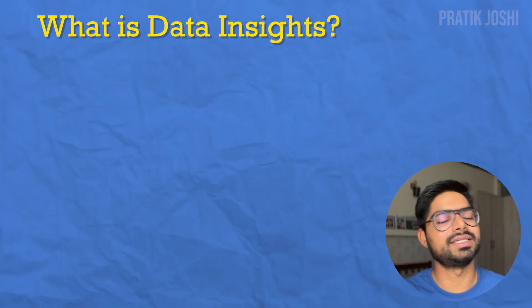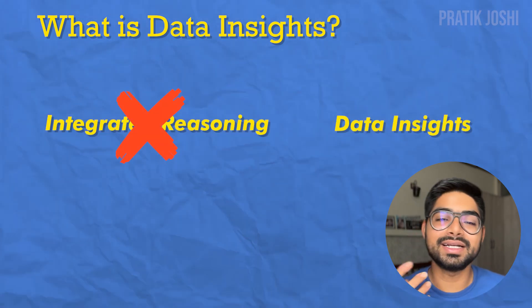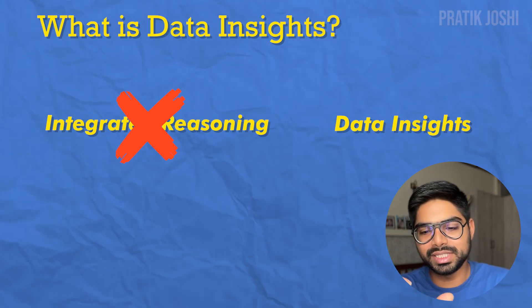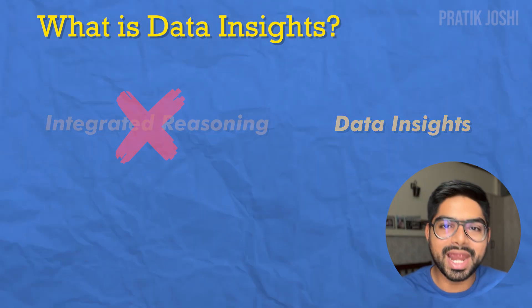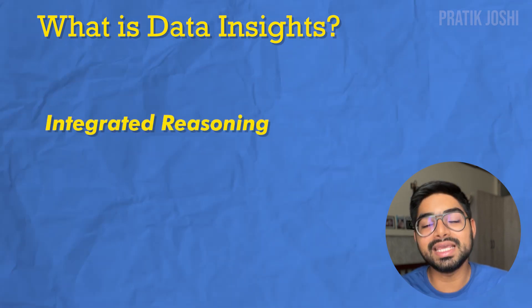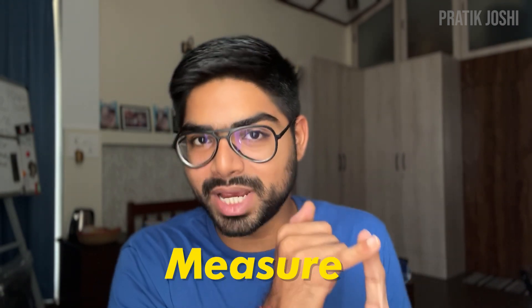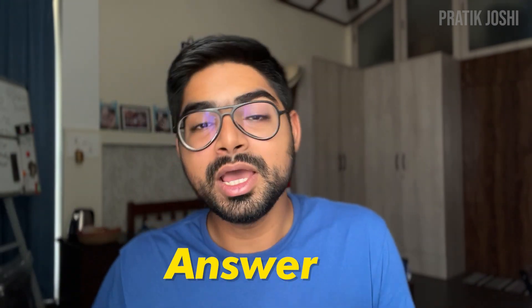So first of all, what is Data Insights? Data Insights is basically a replacement of the Integrated Reasoning section. What they have done is — you must know that Quant has been changed and one part of Quant has been removed, and that same part has now been added to Integrated Reasoning. Hence, when Integrated Reasoning and Data Sufficiency questions come together, it forms a new section called Data Insights. Basically, this section checks the aspirant's ability to analyze data, make a choice based on that data, whether a question can be solved or not, what the exact answer is, how to measure it, how to analyze it, and how to answer the question based on all these data skills.